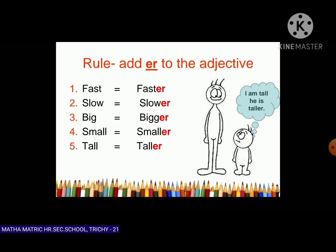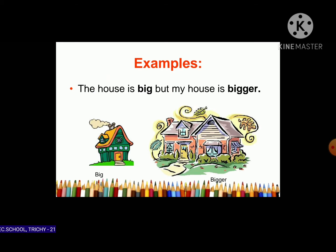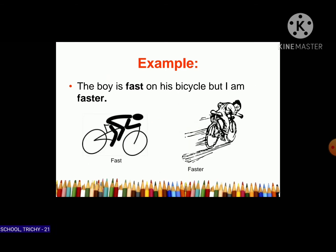More examples: tall (positive) → taller (comparative). For examples using comparative degree: 'The house is big, but my house is bigger.' 'The boy is fast on his bicycle, but I am faster.'